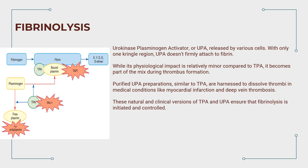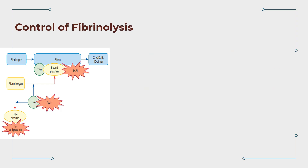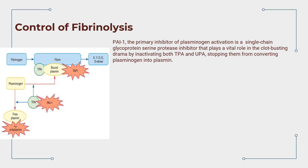PAI-1, plasminogen activator inhibitor-1, is the primary inhibitor of plasminogen activation. This single-chain glycoprotein serine protease inhibitor plays a vital role by inactivating both TPA and UPA, stopping them from converting plasminogen into plasmin. Various cell types, including endothelial cells and smooth muscle cells, contribute to PAI-1 production, with platelets storing a significant portion.